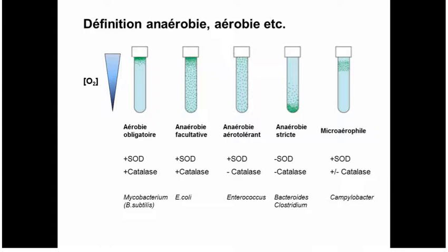Hydrogen peroxide is less toxic than superoxide radical, but still pretty toxic — you can use dilute hydrogen peroxide as a disinfectant since it degrades to water and oxygen. At higher oxygen concentrations, bacteria also need to remove hydrogen peroxide — that's the job of catalase, which degrades it into water and oxygen. Bacteria that grow well with high oxygen concentration must have catalase. So obligate aerobes and facultative anaerobes also have catalase.